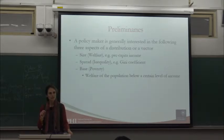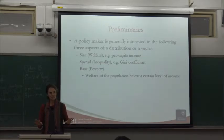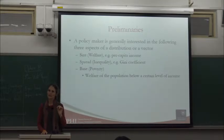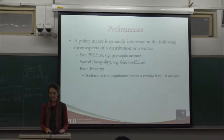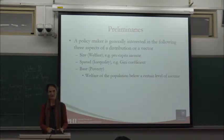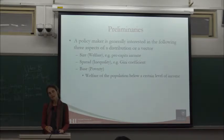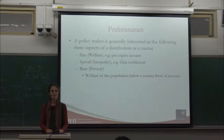There's one very basic aspect of measurement that I find sometimes hasn't been taught accurately. James Foster always emphasizes this: when we talk about measurement relevant for policy, we often measure three different things, and it's very important not to confuse them. One is the size, the mean, the welfare of a population — some function of the entire distribution, like mean income per capita.